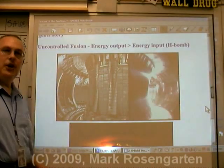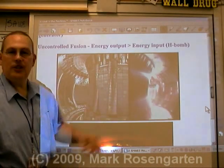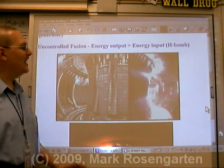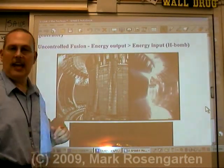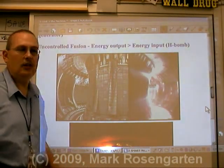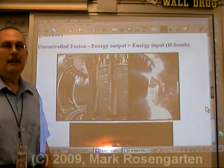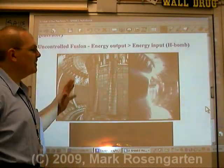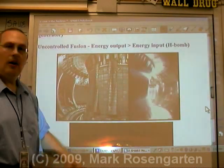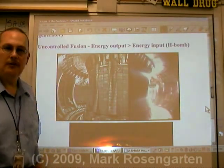This device is called a tokamak. It's a device that makes use of electromagnetic fields to contain hydrogen plasmas and focus them enough so that they undergo fusion. But again, it takes more energy to get fusion to happen than we get out of it at the current time. Now, they've been telling us for the last 60 years that fusion power is just 20 years away. If we can somehow figure out a way to make fusion power work for us, we will have solved pretty much all of our energy problems. This is the ultimate source of energy.